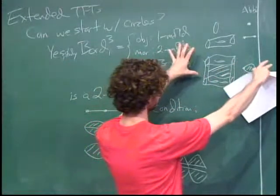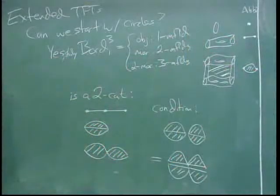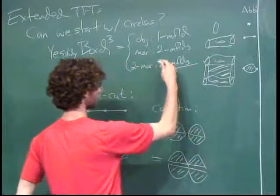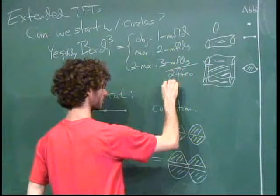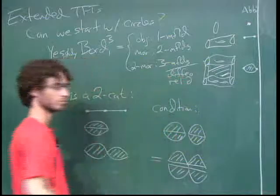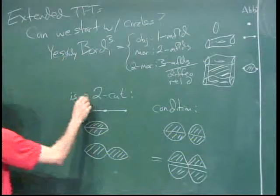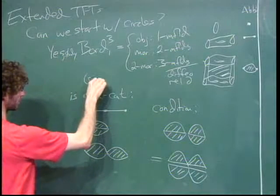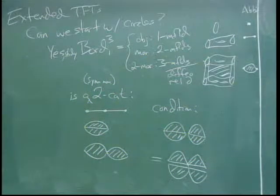With 3-manifolds, you can glue one way and then the other way around, and up to diffeomorphism it doesn't matter. So at the top level, we mod out by diffeomorphism rel boundary. This thing is not just a 2-category; it's actually a symmetric monoidal 2-category, with disjoint union giving a commutative multiplication.